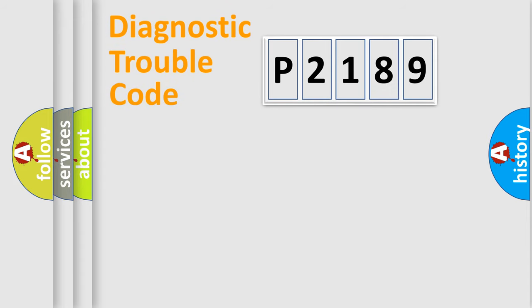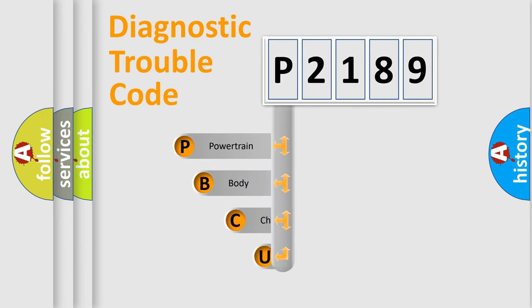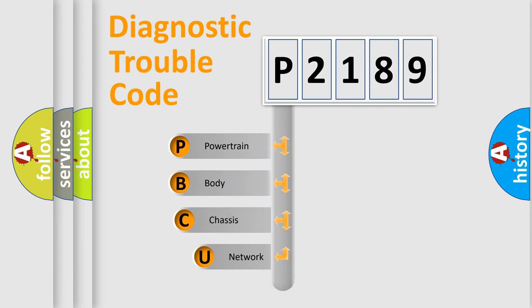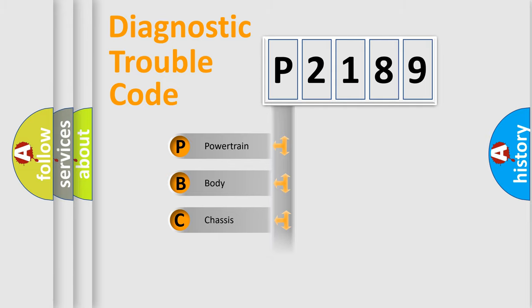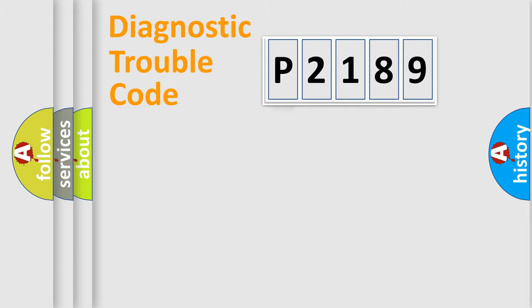Let's do this. First, let's look at the history of diagnostic fault code composition according to the OBD2 protocol, which is unified for all automakers since 2000. We divide the electric system of automobile into the four basic units: Powertrain, Body, Chassis, Network.